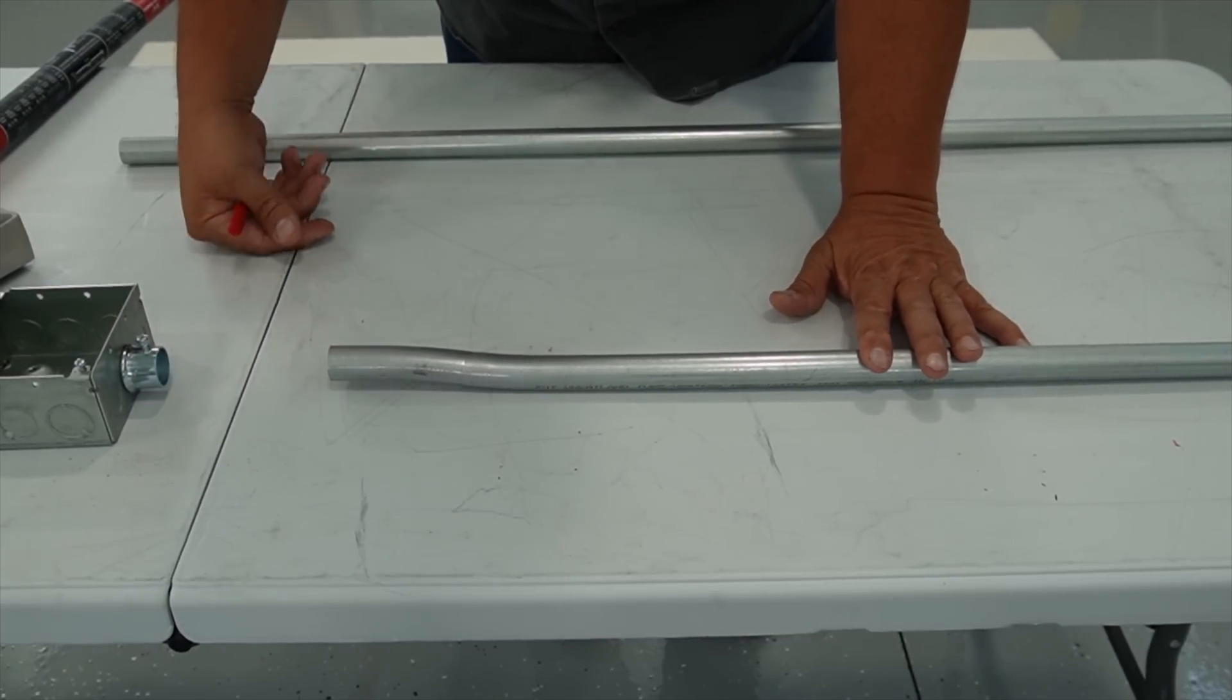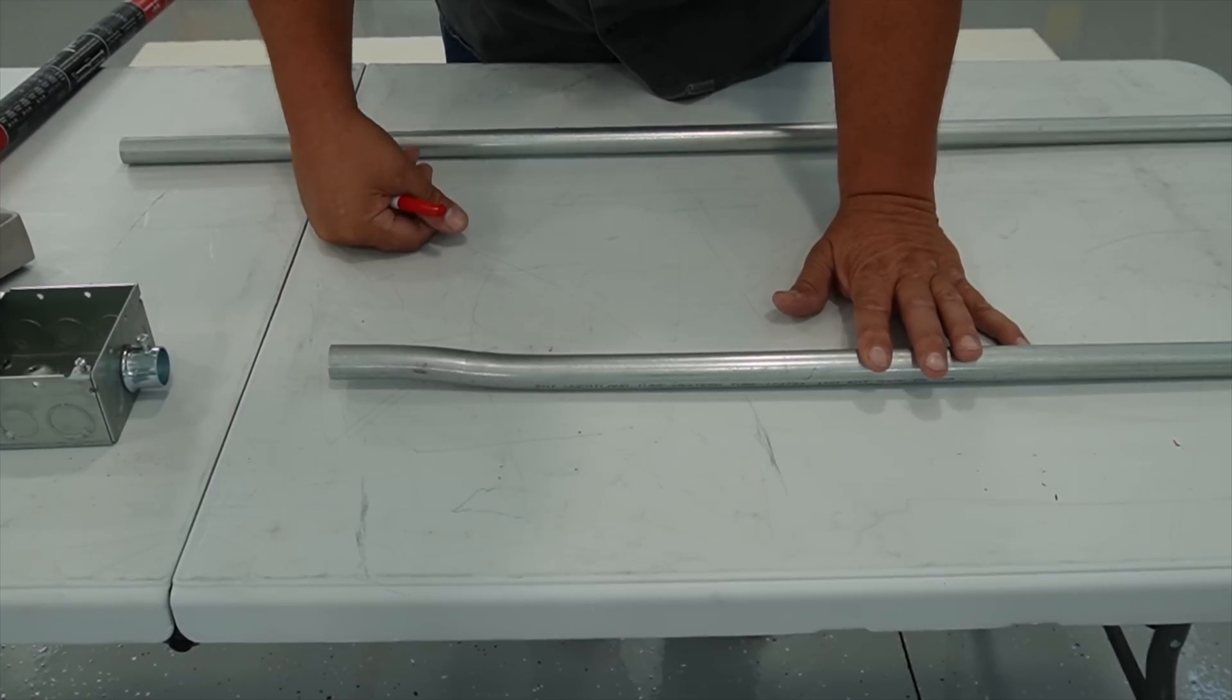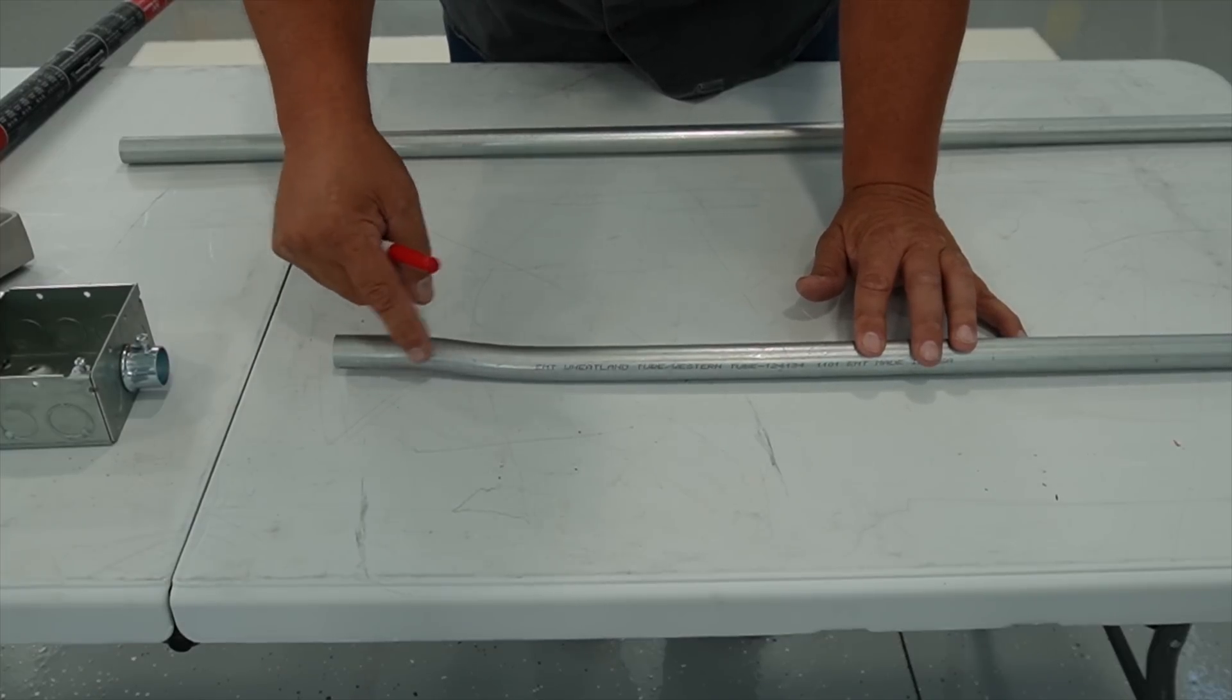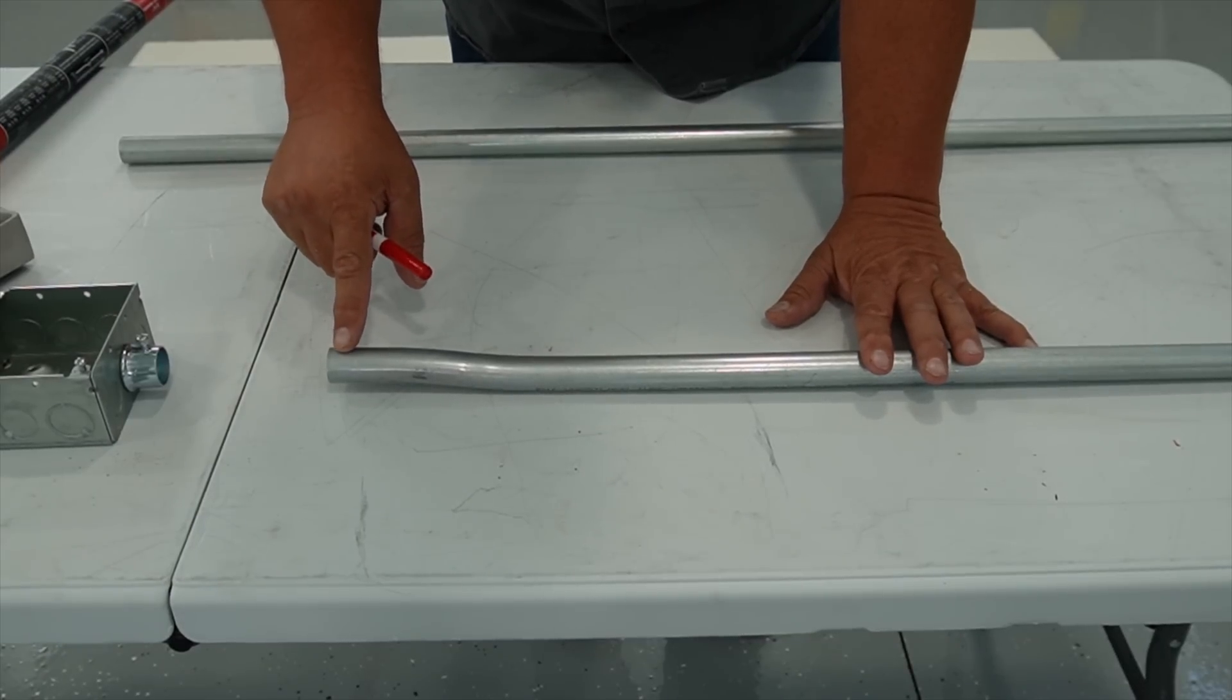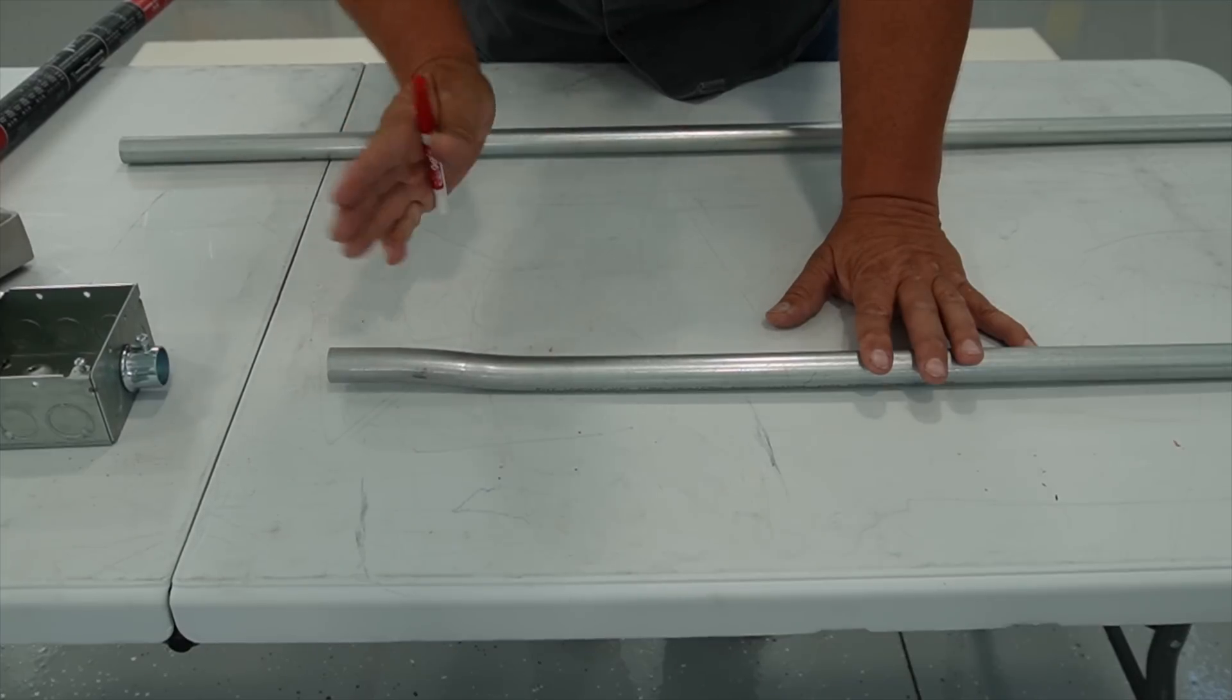And really when it comes down to making them nice and repeatable it comes down to three things: the distance between the two bends, the angle of the bends, and the orientation of the two bends need to be in line so that you don't get a dog leg.